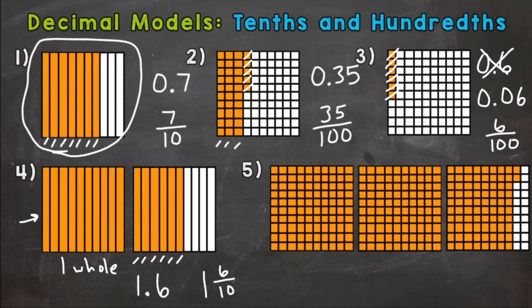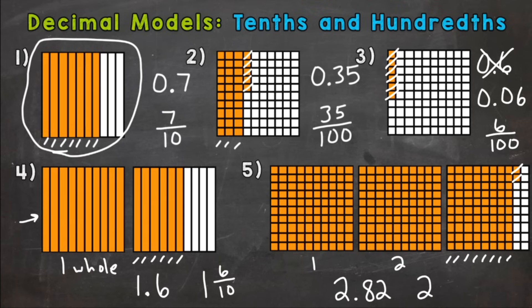On to number five, where we have two full squares filled in — so this is one whole and then two wholes. As far as the decimal or fractional square, we can start by counting by tens because each of those columns represents ten hundredths: ten, twenty, thirty, forty, fifty, sixty, seventy, eighty, eighty-one, eighty-two. So we have two and eighty-two hundredths. Or in fractional form, two and eighty-two hundredths.